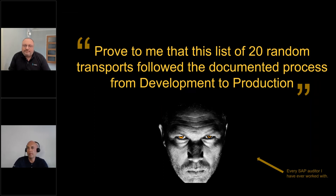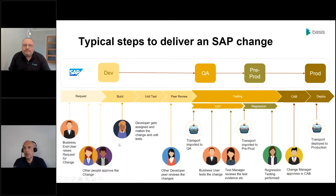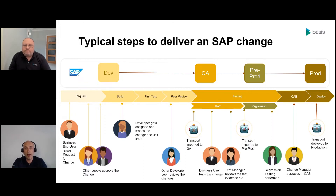That made it really difficult in my role as an SAP change and release manager. The auditors would come in and ask me to prove that these random 20 transports followed the process. I'd be running around, digging out emails, looking through the history section of tickets, really trying to prove to the auditors that the correct processes were being followed between a developer creating the transport and moving it through the landscape to production. When you look at the typical SAP process on screen, there's quite a lot of important events happening and quite a lot of people involved — even in this simple four-system landscape.